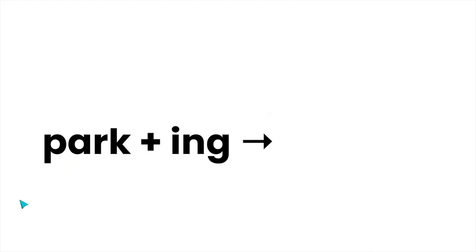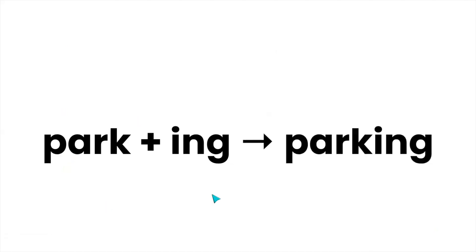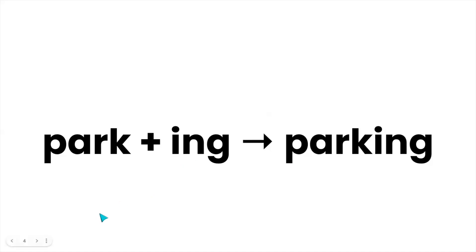So here we have P-A-R-K plus I-N-G. No changes need to be made to the base in order to add this particular suffix. And so P-A-R-K plus I-N-G is rewritten as P-A-R-K-I-N-G, parking. The reason that we always spell the base and do not say the word prior to arriving on the right-hand side of the arrow is because the pronunciation of certain bases can change depending on the affixes attached to them. This way we remove confusion for students because we are spelling them aloud.